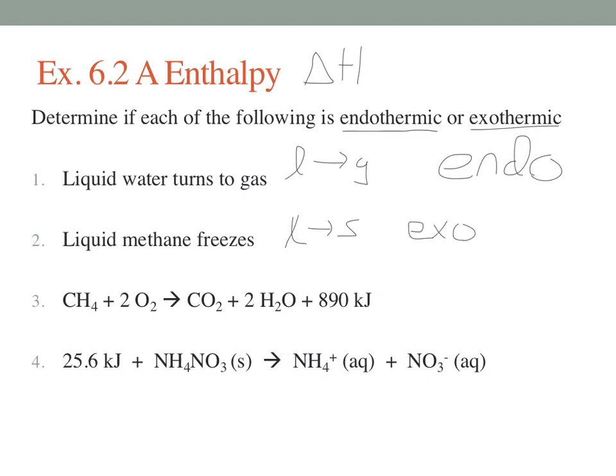We can add energy terms to balanced equations. It's not typical to write them this way, but we can look at them as products or reactants. In example 3, 890 kilojoules is on the product side. That just means if it's a product, that heat is coming out, exothermic.